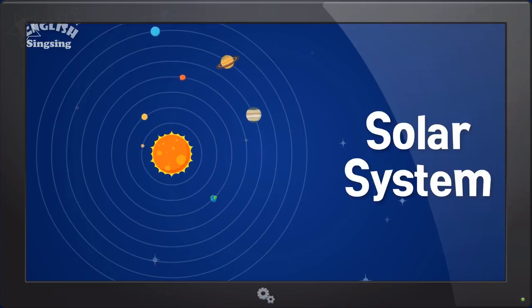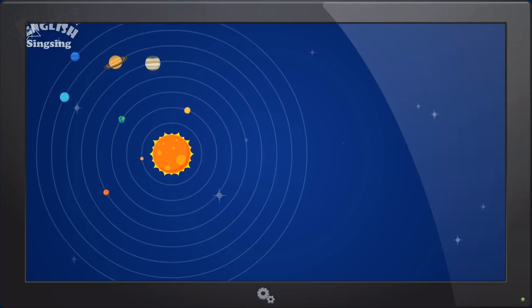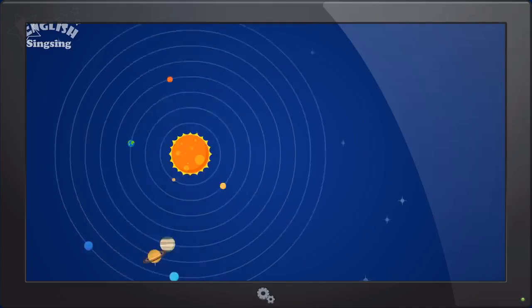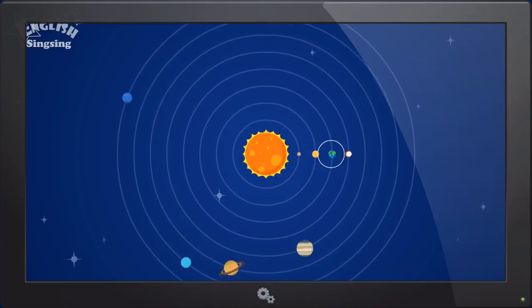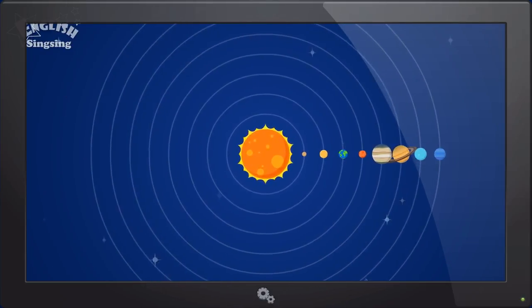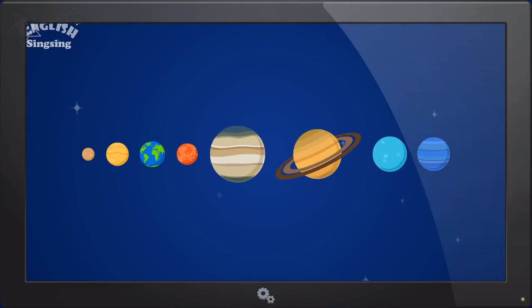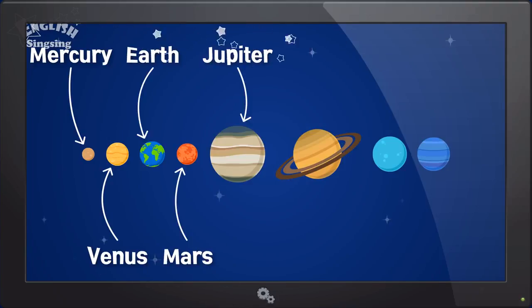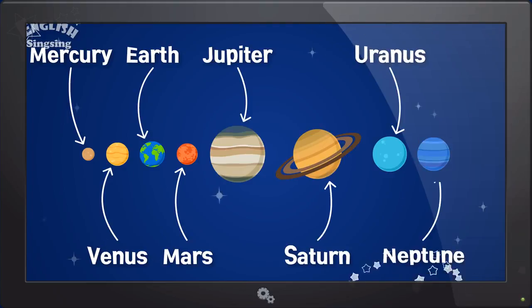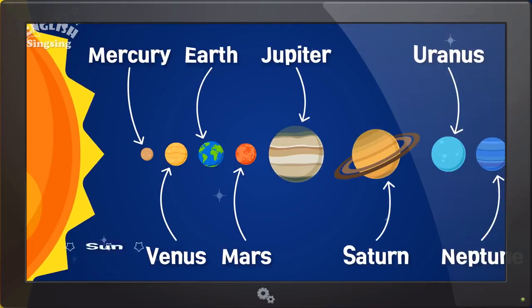This is our solar system. Mercury, Venus, Earth, Mars, Jupiter, Saturn, Uranus, Neptune, and the sun.